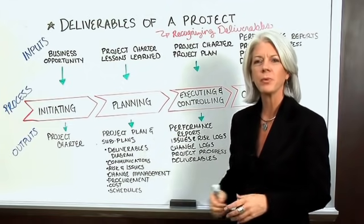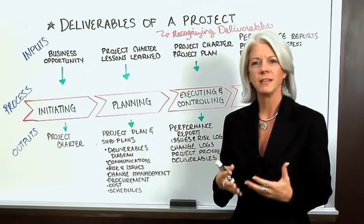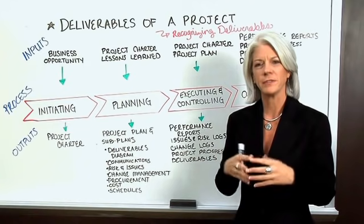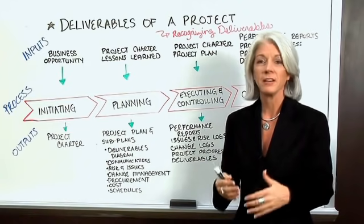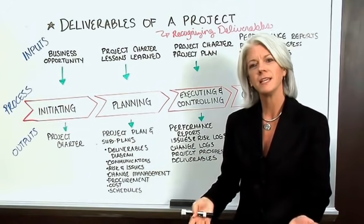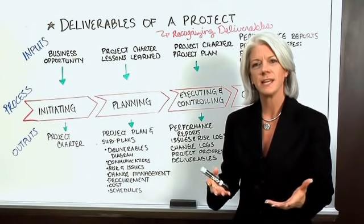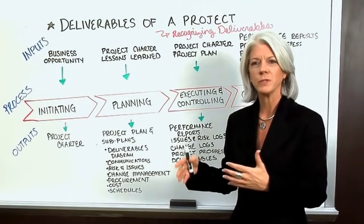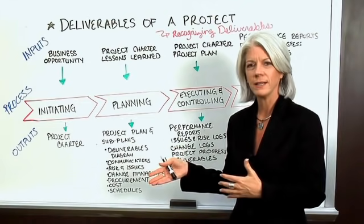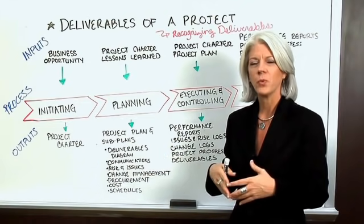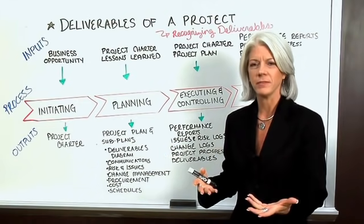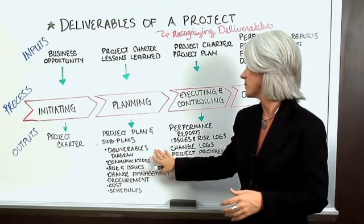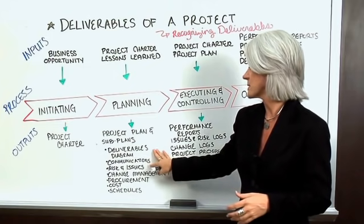It's very important to identify a picture for the team — not only for the project manager, but the team and the stakeholders — to show what's going to be done when and what's going to be delivered. So the deliverables diagram is a very important document.